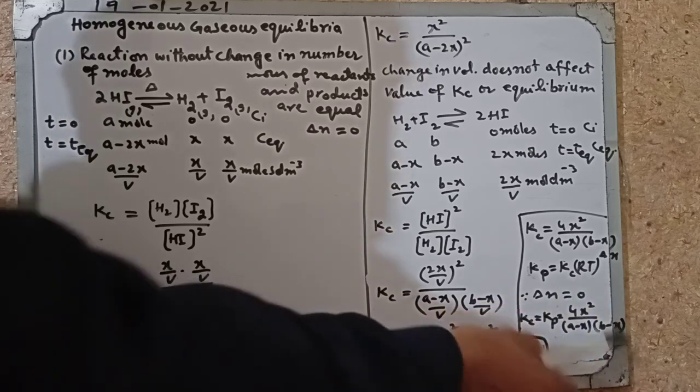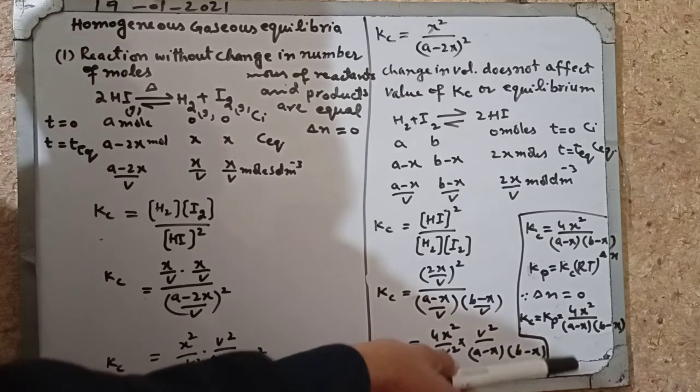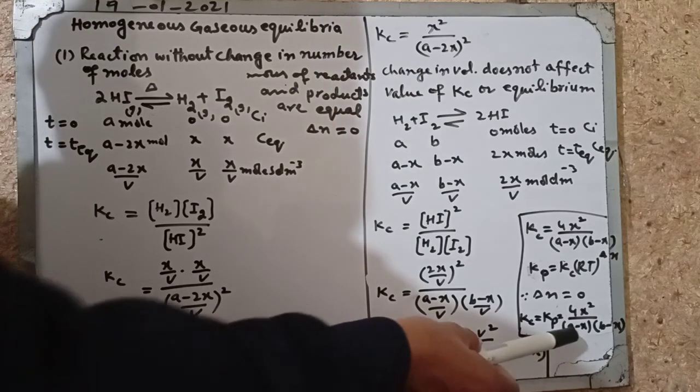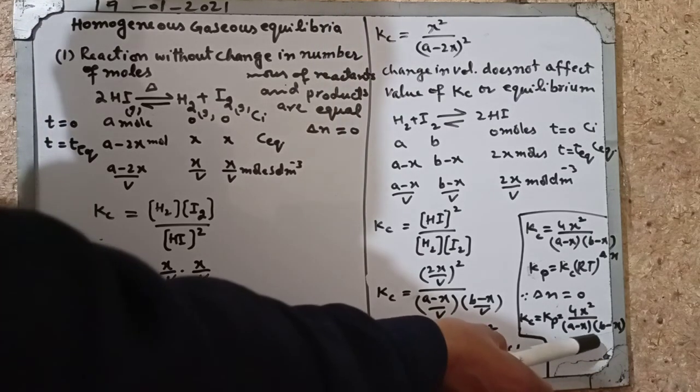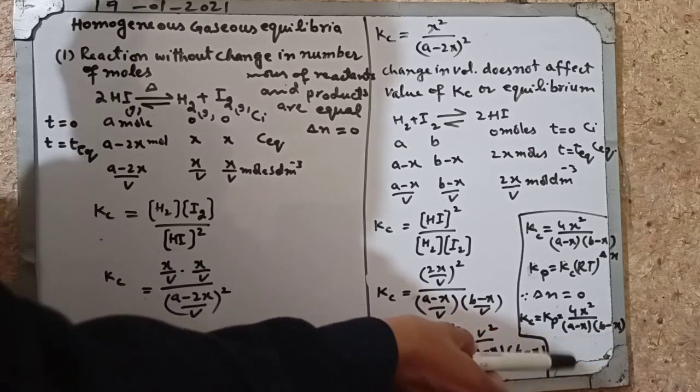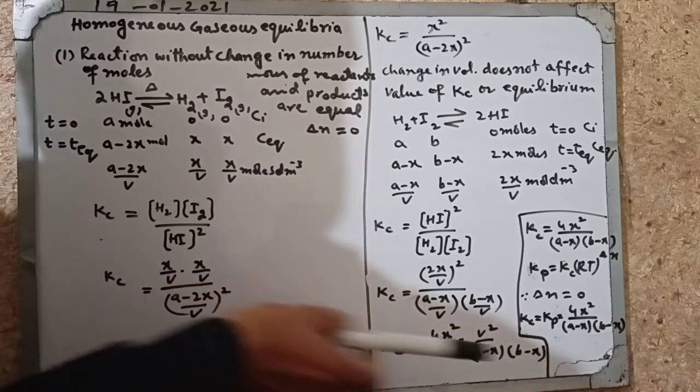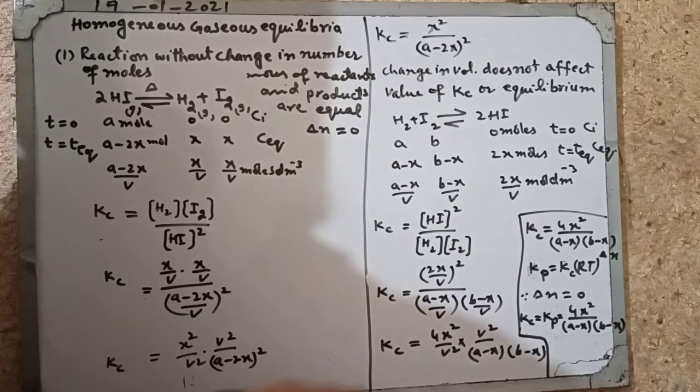The reaction forward and backward are equal. We can say that the equation does not involve the volume. Therefore, change of volume does not affect the value. The value of Kc does not depend upon the volume or the pressure.